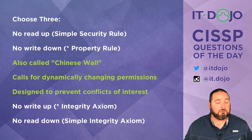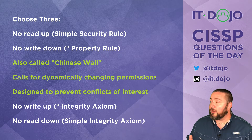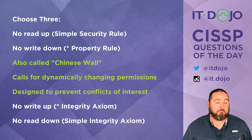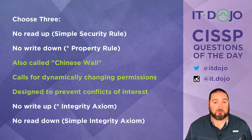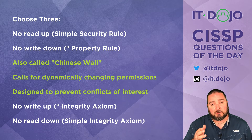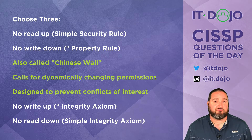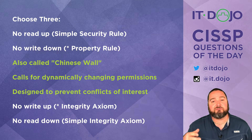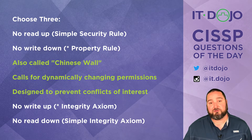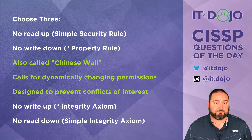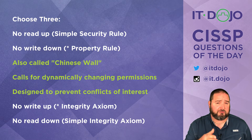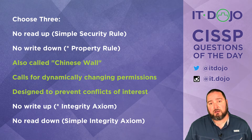BIBA includes 'no write up' and 'no read down' — which appear to be the exact opposite of the Bell-LaPadula rules, because they are specifically geared towards preserving the integrity of information. Bell-LaPadula is associated with preserving confidentiality, whereas BIBA is associated with preserving integrity. Neither of those matters for this question — they're just there to distract you.